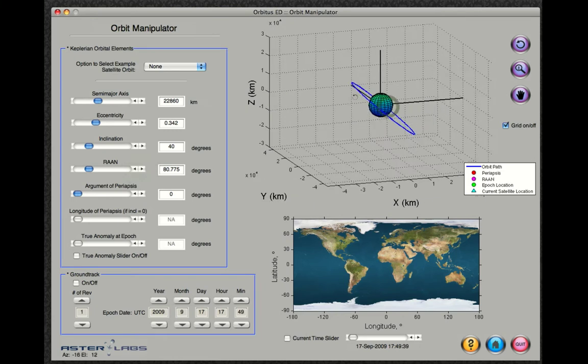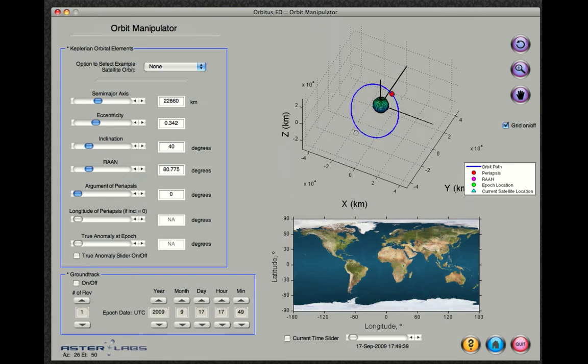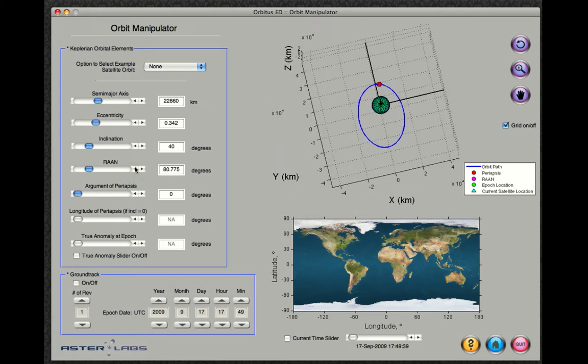You can rotate this image in any way you want and continue to alter these elements. You can also change the satellite's location at the observation time.